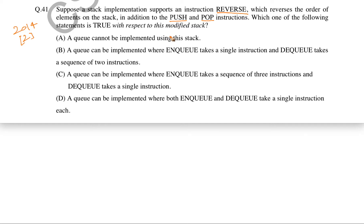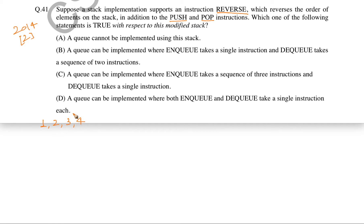With respect to this new special stack defined in the question, which of the following statements is true? The options talk about whether a queue can or cannot be implemented using these three operations — push, pop, and reverse — in the modified special stack. Let's forget about the options for now and think about how we can implement a queue using this stack. A queue is first-in-first-out: whichever element is enqueued first should be dequeued first.